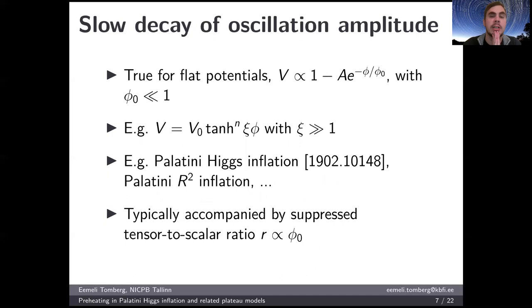Typically these flat potentials can be approximated as a constant minus an exponentially decaying term on this plateau, and this slow decay of oscillation amplitude happens if this decay rate φ₀ is small enough. As a practical example, one might consider a hyperbolic tangent potential where a large value for this ξ parameter here ensures this slow decay. This happens for example in Palatini Higgs inflation, which is where we first studied this and which I will also be using as an example later on. But this also happens in other similar models.